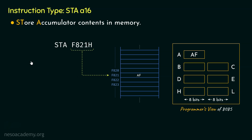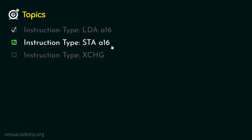Another thing to note: we only have instructions like LDA A16 and STA A16. There are no instructions like LDB or LDC, neither are there instructions like STB or STC. Remember, both LDA and STA refer to the accumulator register only, and this is the reason why the accumulator is a special purpose register. Unlike the general purpose registers, the accumulator can be addressed in multiple ways.